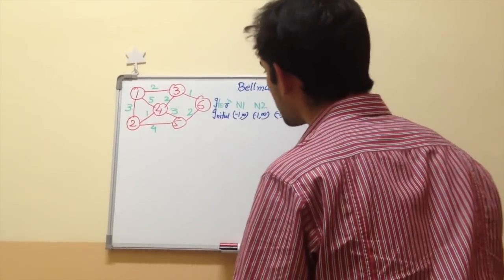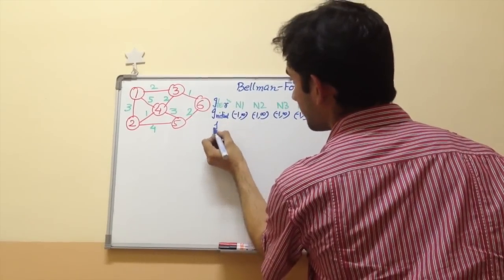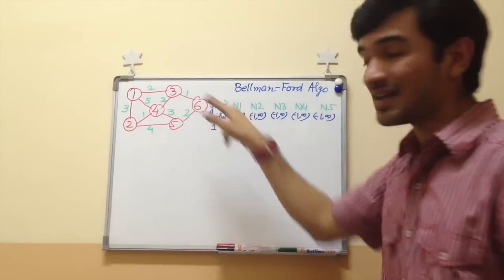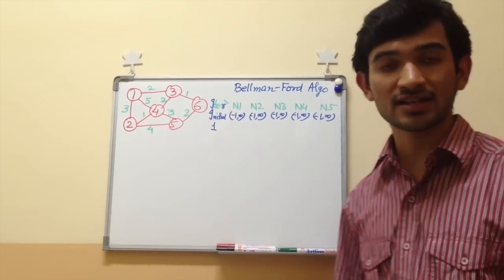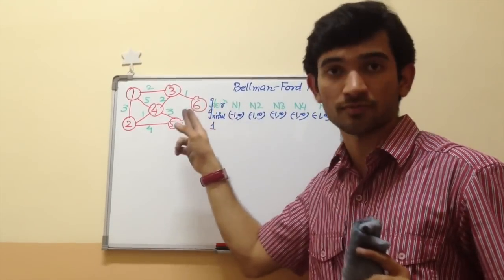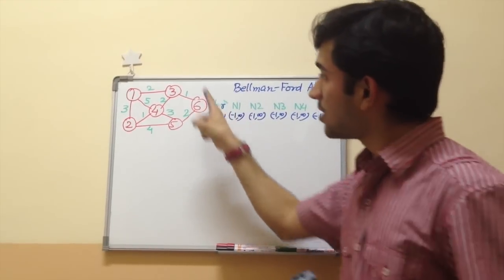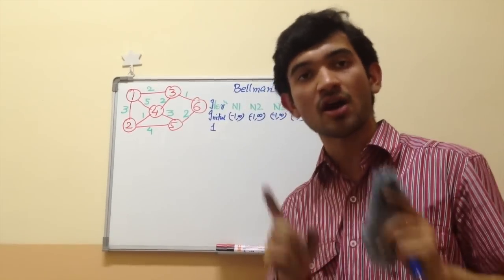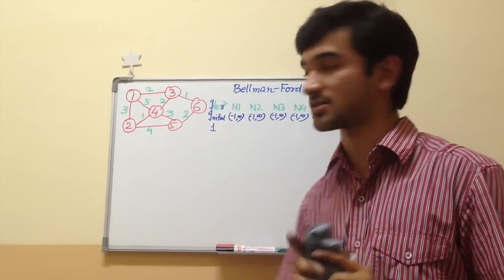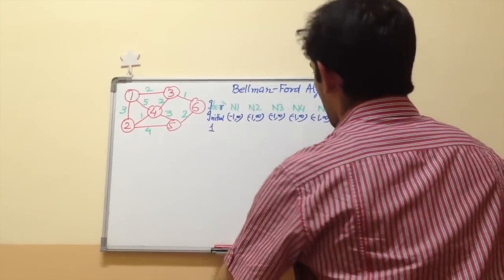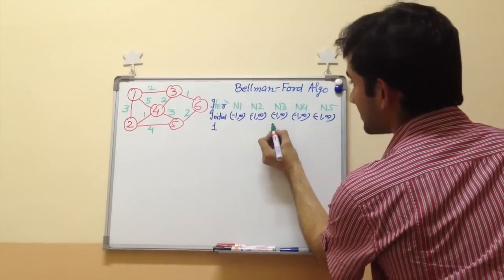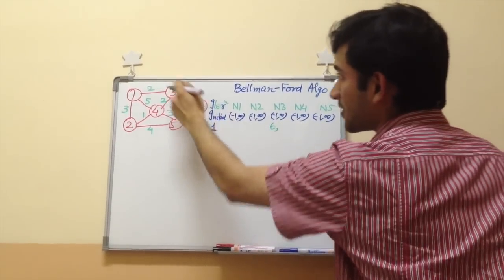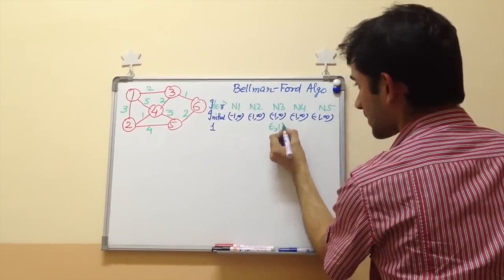Now I will come to the first iteration. In the first iteration, node 6 tells its neighbors, nodes 3 and 5, that yes, it is there for them. Because node 6 tells nodes 3 and 5, now nodes 3 and 5 know that they can connect to node 6. Node 3 says that yes, it can go to node 6 with a distance of 1.